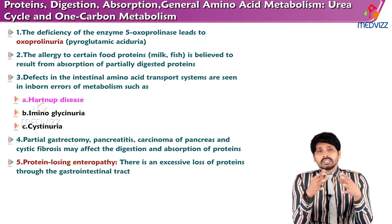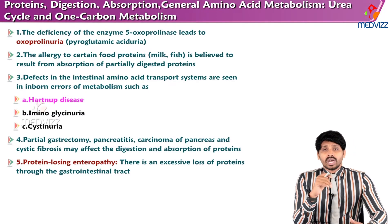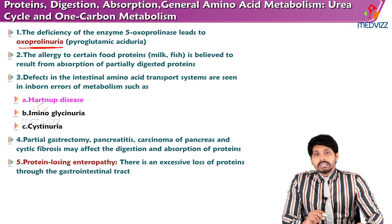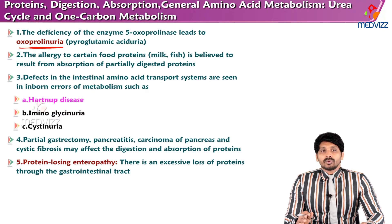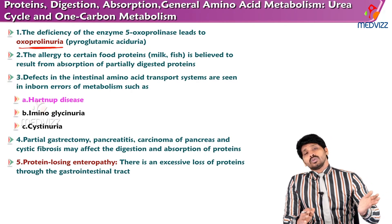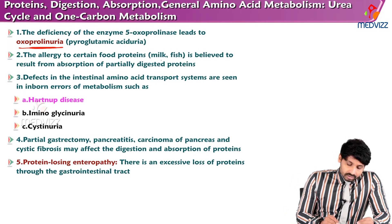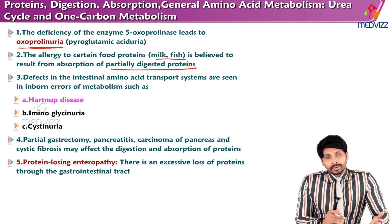Regarding deficiencies related to amino acid absorption: deficiency of the enzyme 5-oxoprolinase leads to oxoprolinuria. Because oxoprolinase converts glutamyl-amino acid to glutamate, its deficiency causes glutamyl-amino acid to accumulate and be excreted in the urine, causing oxoprolinuria. Allergy to certain food proteins like milk and fish is believed to result from absorption of partially digested proteins that escape the brush borders of intestinal cells and enter directly into the portal vein.